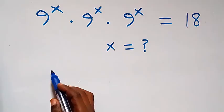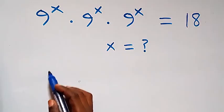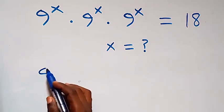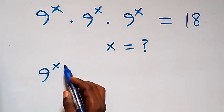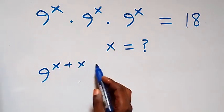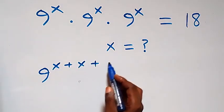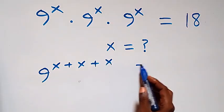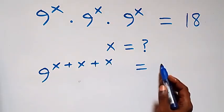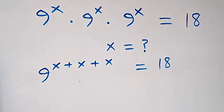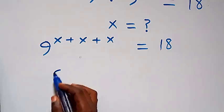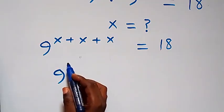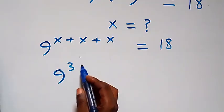From here, apply the law of indices. We can write this as 9 raised to the power x plus x plus x.